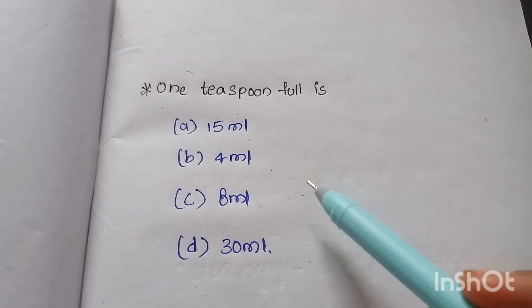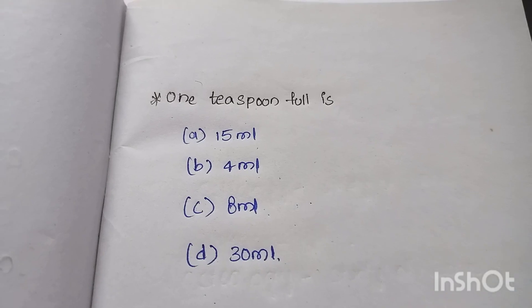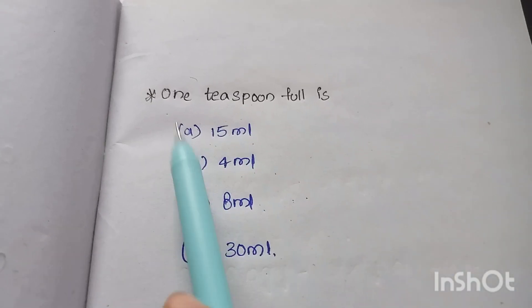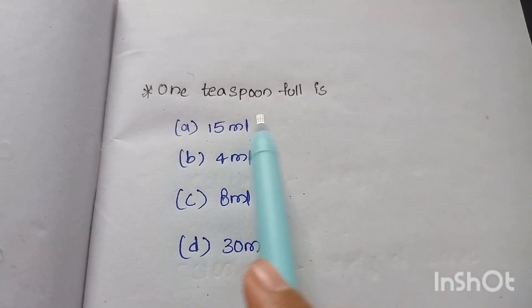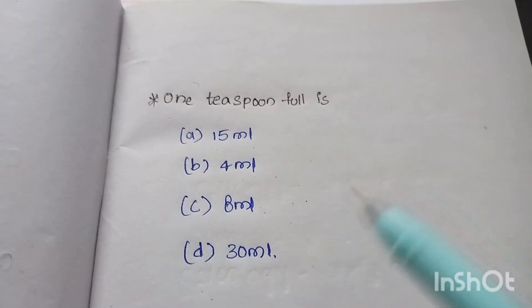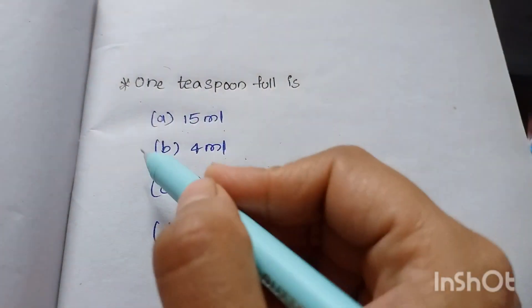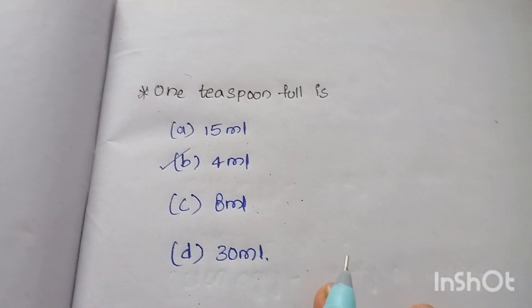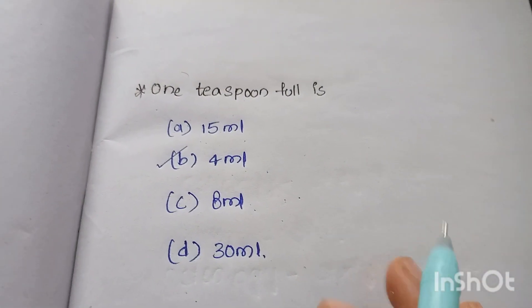The answer is: 1 teaspoonful is Option B, 4 ml. Option B is the correct answer — 4 ml.